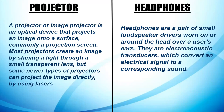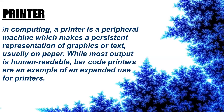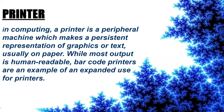Headphones are a pair of small loudspeaker drivers worn on or around the head over a user's ears. They are electroacoustic transducers which convert an electrical signal to a corresponding sound. Printer. In computing, a printer is a peripheral machine which makes a persistent representation of graphic or text, usually on paper. Barcode printers are an example of an expanded use for printers.